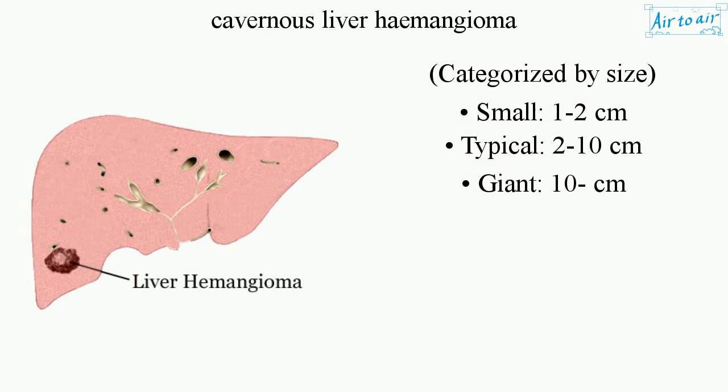Hemangiomas are categorized by size: small (1 to 2 centimeters), typical (2 to 10 centimeters), and giant (greater than 10 centimeters).